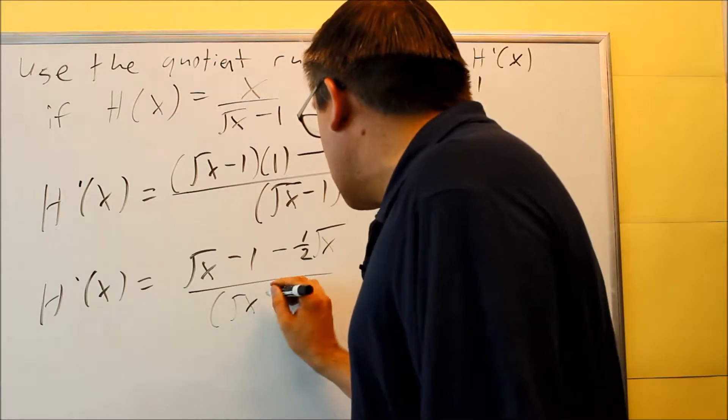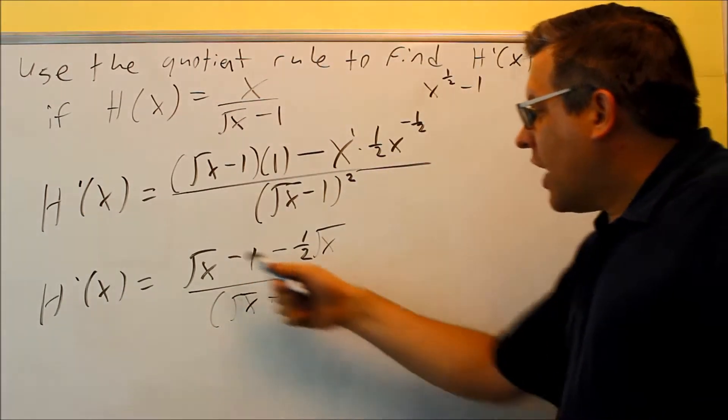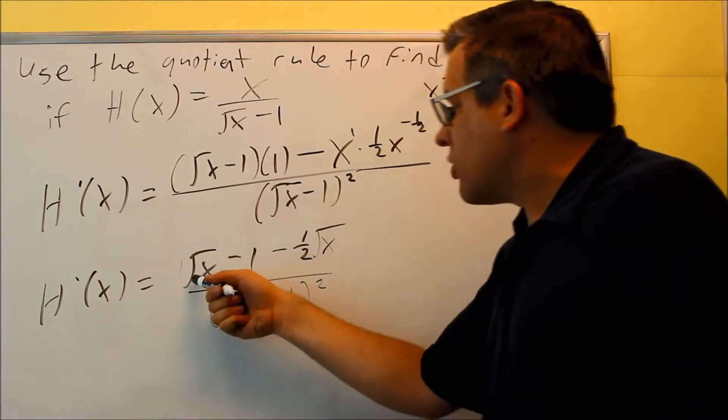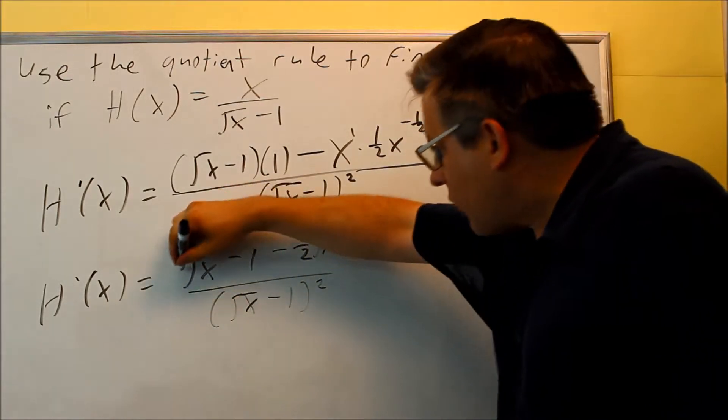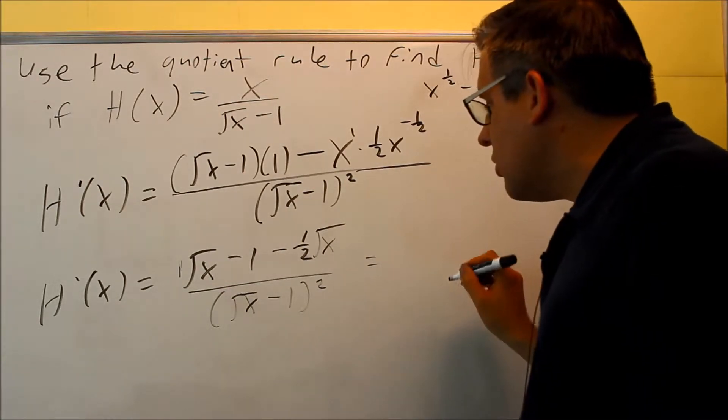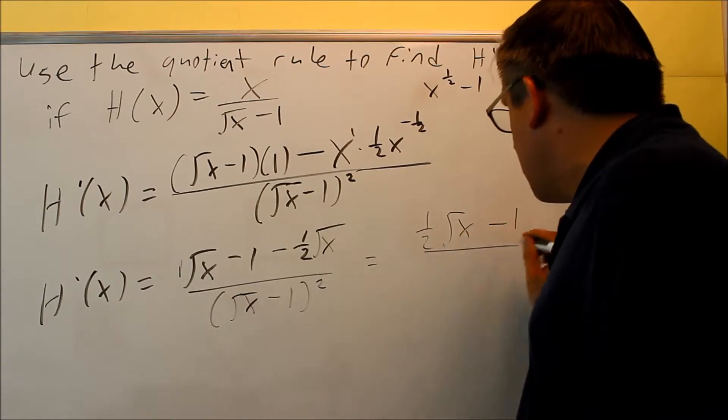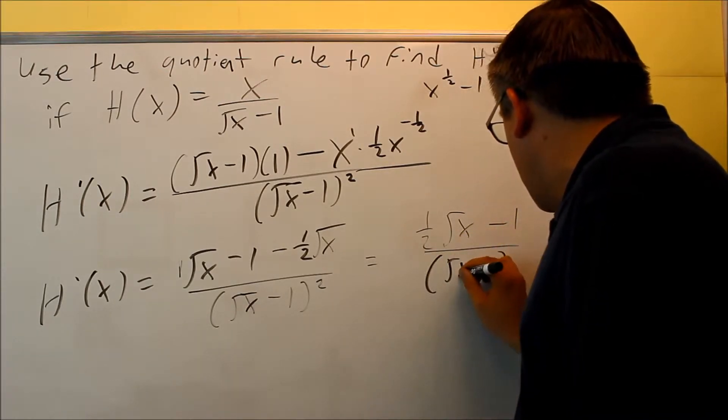Over the bottom one, square root of x minus 1 squared. We have some like terms that are here. There's a 1 square root of x, and a minus 1 half there, so we can combine those together into a 1 half square root of x minus 1.